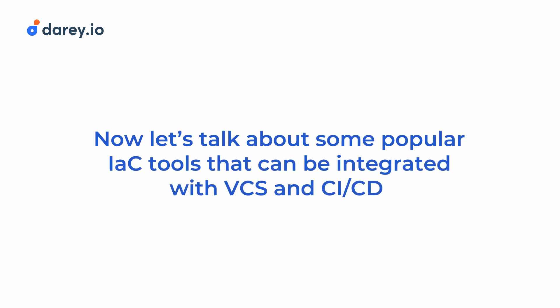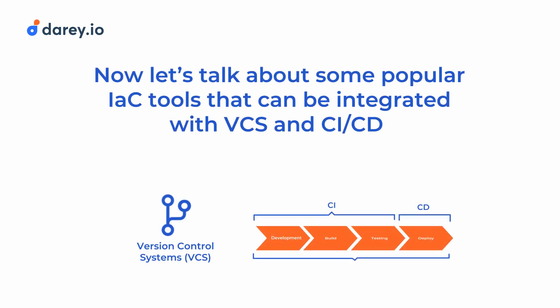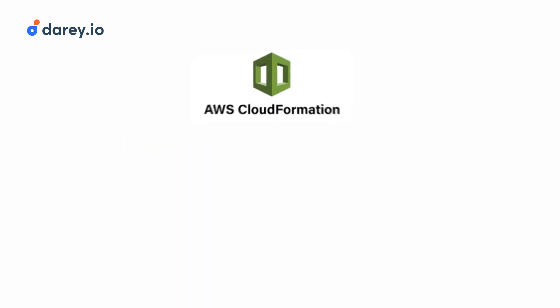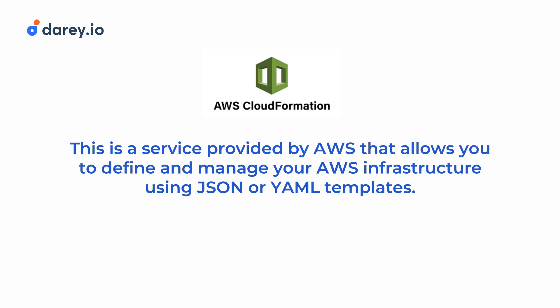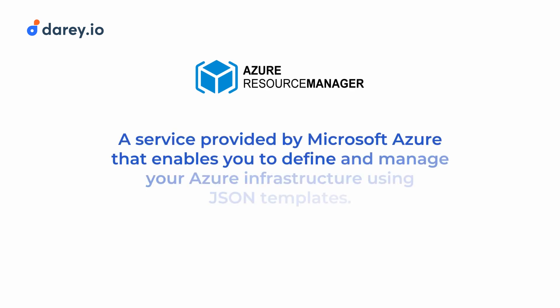Now let's talk about some of the popular infrastructure as code tools that can be integrated with version control systems and have CI/CD pipelines built for them. Terraform is an open source IAC tool that supports multiple cloud providers and enables managing infrastructure using a declarative language called HashiCorp Configuration Language, or HCL. AWS CloudFormation is a service provided by AWS that allows you to define and manage AWS infrastructure using JSON or YAML templates. Azure Resource Manager templates, otherwise known as ARM templates, are a service provided by Microsoft Azure that enables defining and managing Azure infrastructure using JSON templates.